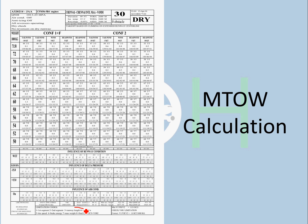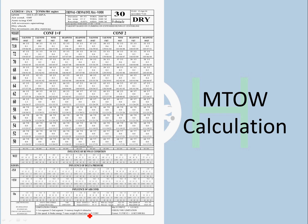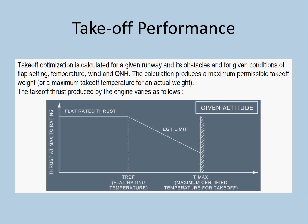Before we proceed to the MTOW calculation, I want to bring to your notice this temperature here — I will just zoom in as well — TREF 44, TMAX 55. Somebody asked me what TREF and TMAX are, so I am going to explain that first. This is a takeoff performance standard graph. Takeoff optimization is calculated for a given runway and its obstacles, and for given conditions of flap settings, temperature, wind, and QNH. The calculation produces a maximum permissible takeoff weight — that is MTOW — or maximum takeoff temperature at an actual weight. The takeoff thrust produced by an engine varies as follows, and this graph is very important. TREF, as you can see marked here, is the maximum flat rating temperature.